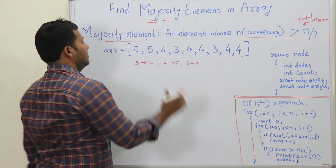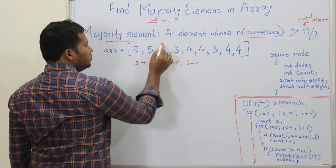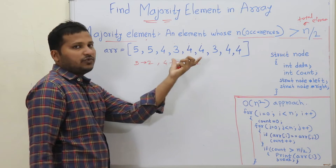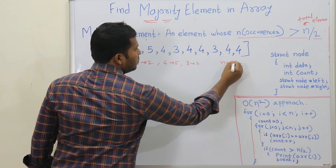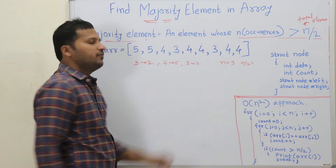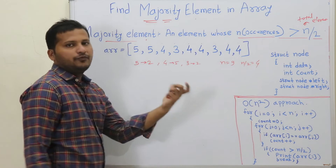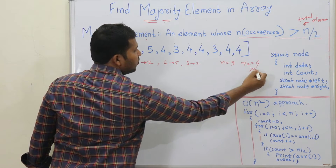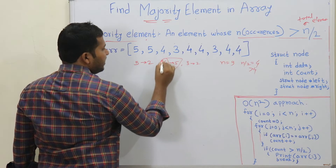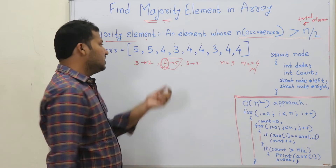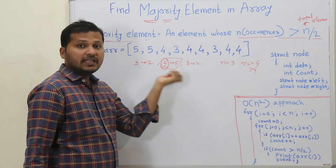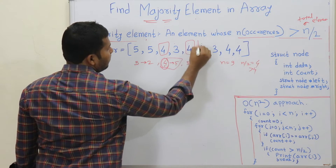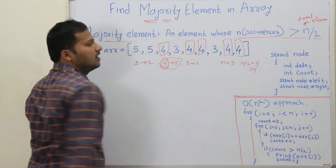Now let's see the size of this array. There are 9 elements, so n is equal to 9. Then n/2 is equal to 4, because we take only integer answers. Whose occurrence is greater than 4? Obviously element 4, which occurs 5 times — its occurrence is greater than half the size of the array. So element 4 is the majority element.